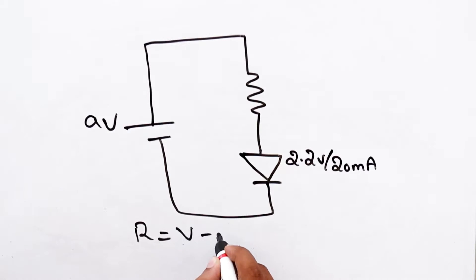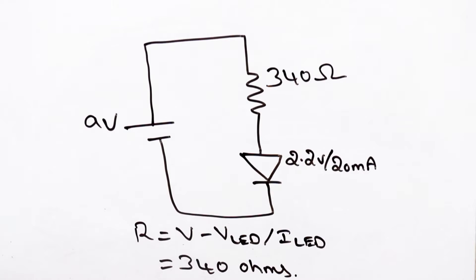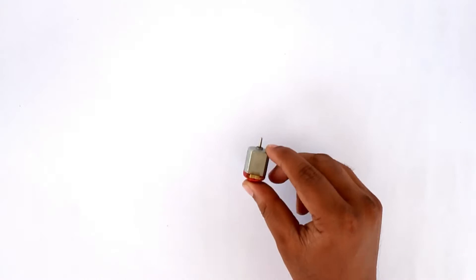Using this formula, we can calculate the value of current limiting resistor. The 340 ohm resistor limits the current to 20mA for LED and protects it from getting damage from the current. The above formula applies when you need to limit current to motor, relays, batteries, etc.